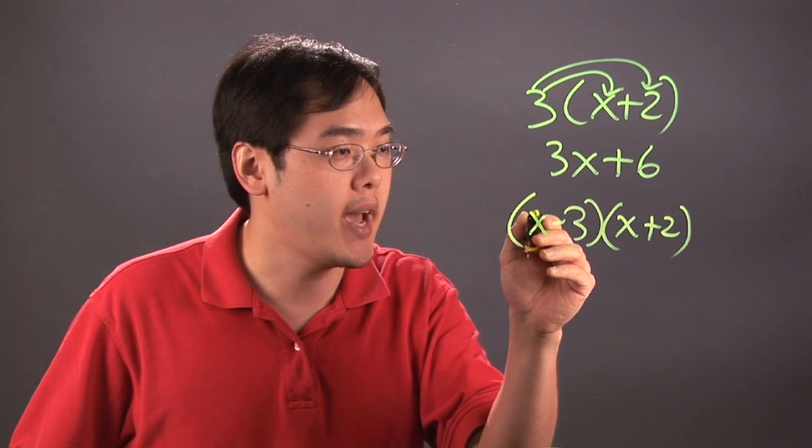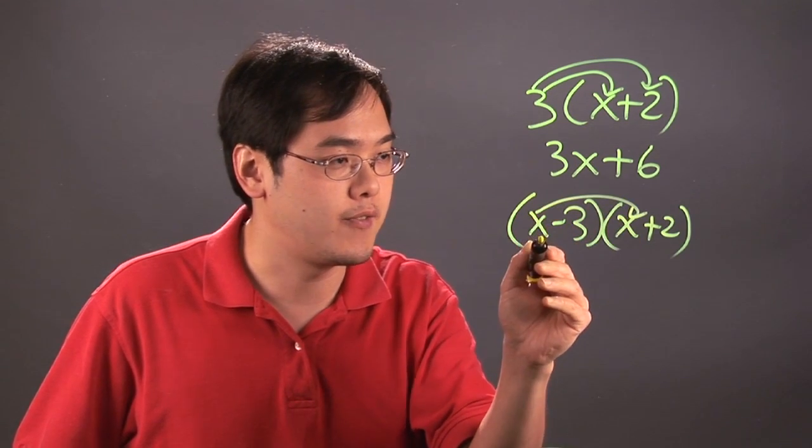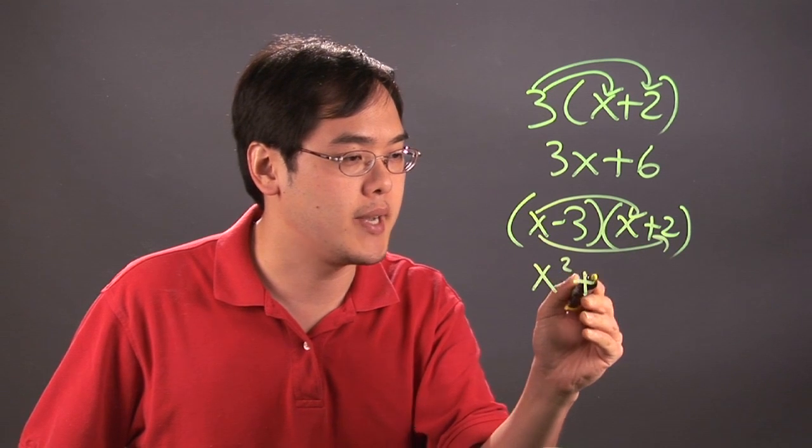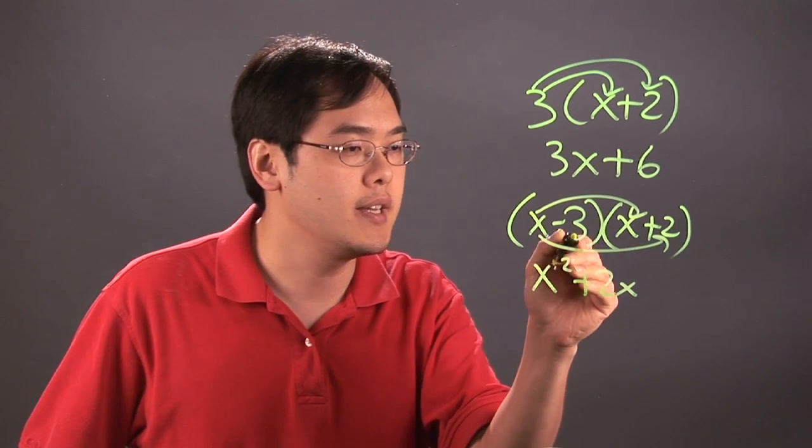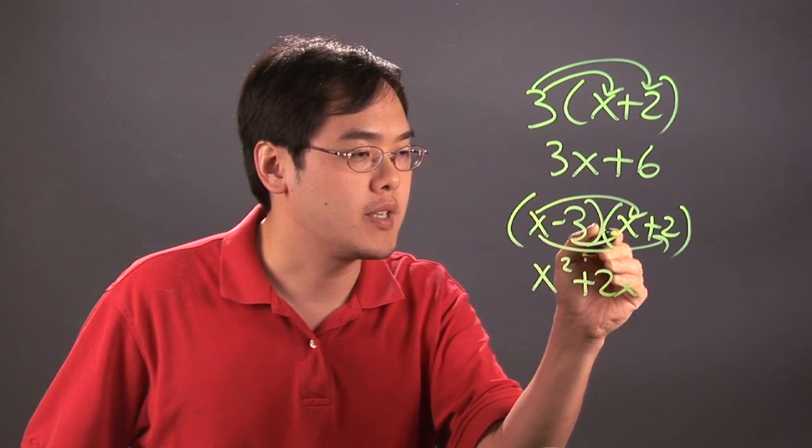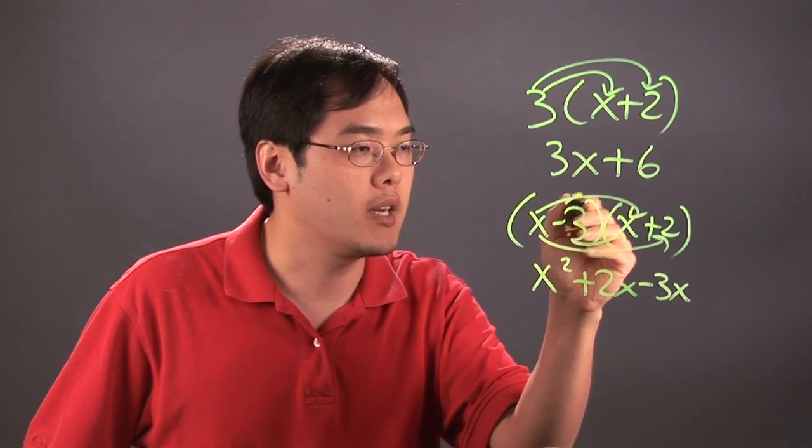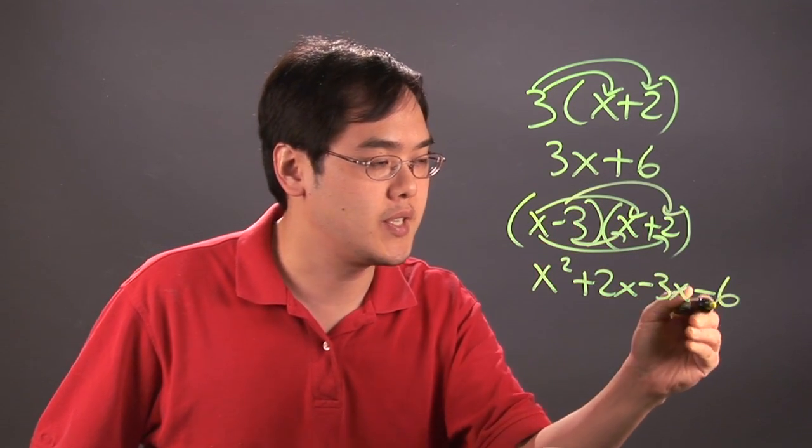you use the FOIL method. So x times x, that's the first, that's going to be x squared. Outside, x times 2, that's positive 2x. The inside, negative 3 times x is negative 3x. And then the last term, negative 3 times 2, that's going to give you negative 6.